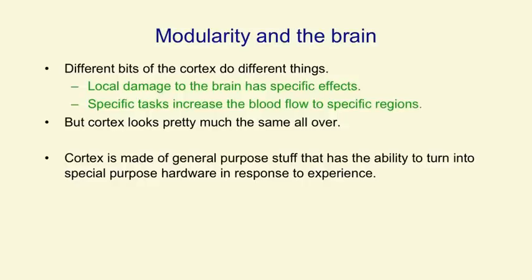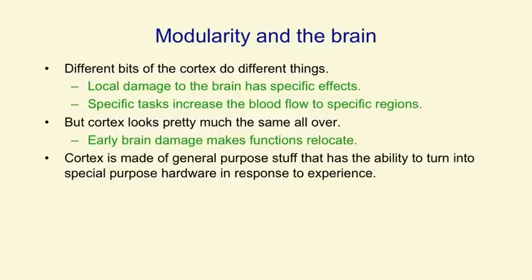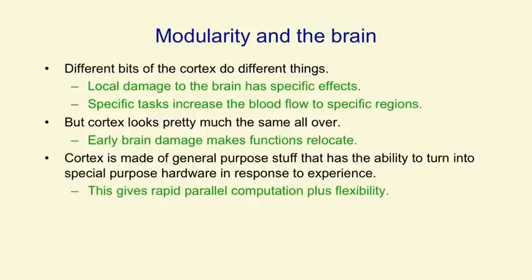The remarkable thing about cortex is it looks pretty much the same all over, which strongly suggests that it's got a fairly flexible universal learning algorithm in it. That's also suggested by the fact that if you damage the brain early on, functions will relocate to other parts of the brain — so it's not genetically predetermined which part of the brain will perform which function. There are convincing experiments on baby ferrets showing that if you cut off the input to the auditory cortex from the ears and instead re-route the visual input to auditory cortex, then the auditory cortex that was destined to deal with sounds will actually learn to deal with visual input and create neurons that look very like the neurons in the visual system.